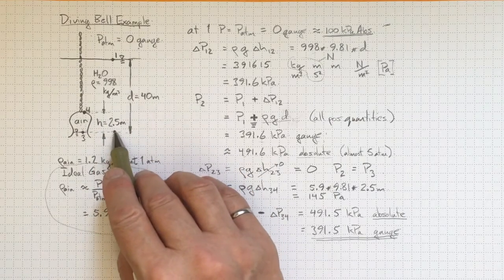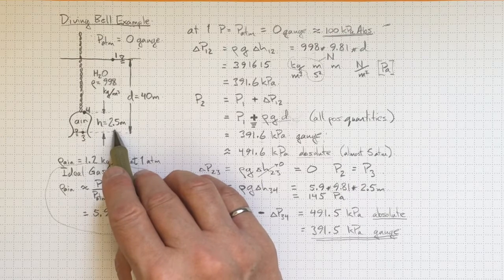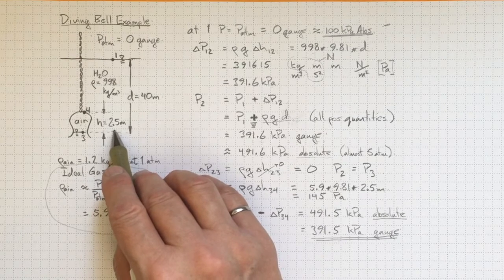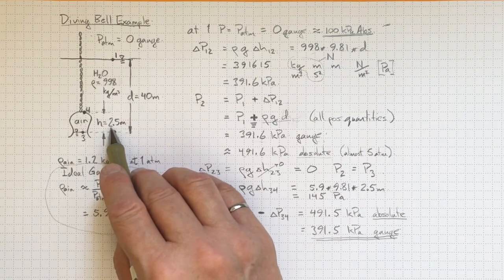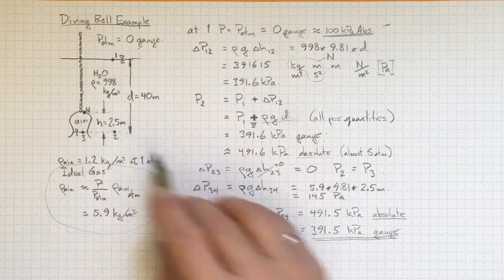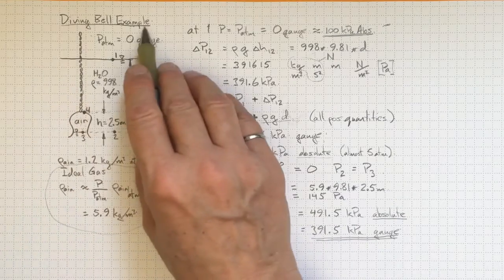So if you go to the bottom of a swimming pool, say 2.5 meters down, significant increase in pressure. If you go down a set of stairs 2.5 meters down, very negligible increase in the air pressure. So in this diving bell example, we've seen how to start from a known datum pressure, work our way down to another pressure at this location.